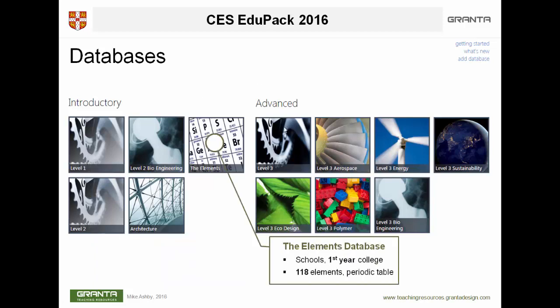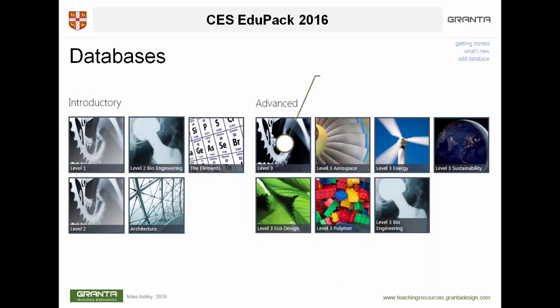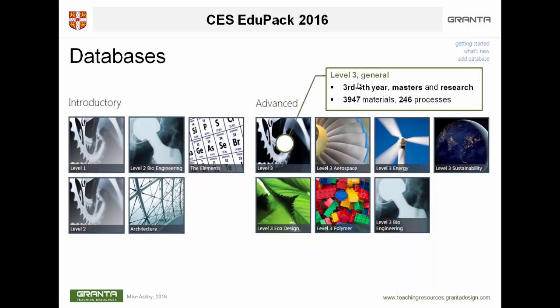Level 2 is a good starting point in a university course — it has 100 materials and 115 processes, and also has more information in the records which are longer and contain more data. Once students get familiar with it, there are two more databases: one is a database of the elements of the periodic table, useful for basic standard stuff about the elements, and there's the Level 3 engineering database aimed at third and fourth year projects, masters level topics, and possibly research.